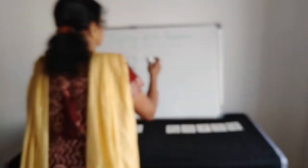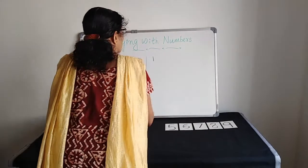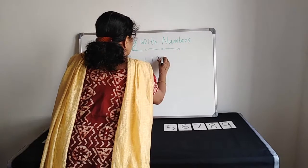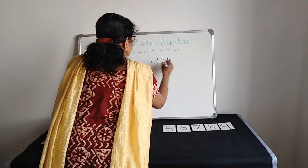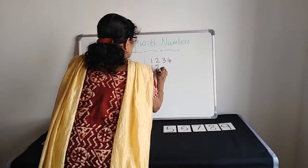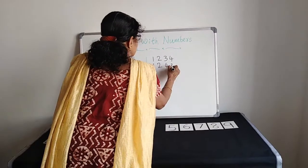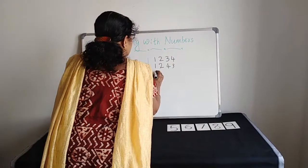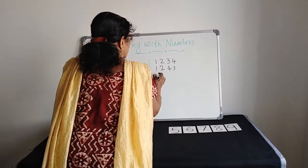How many numbers we made? Any guess? We will write and see. Starting with 1, 234, 1, 243. These 2 digits I have exchanged. The next is 1, 2. We have done 2 numbers.